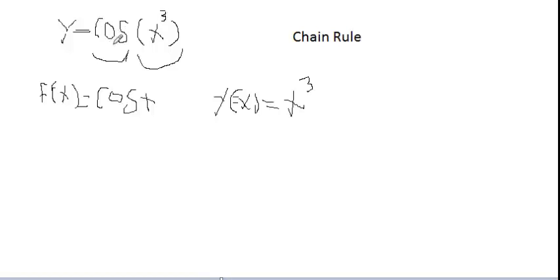Cosine times x to the third power. So we call this the out function, we call this the in function.